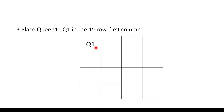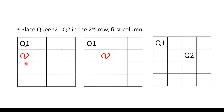Now let's place Q2. Q2 should be placed in the second row. Starting with the first column, we see that Q1 and Q2 would be in the same column — against the constraint. Moving to the second column, Q1 and Q2 are diagonally opposite — also against the rule. So we shift Q2 to the third column.